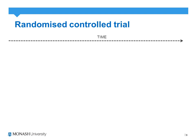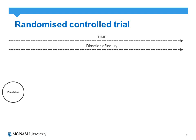This slide demonstrates the randomized controlled trial design. It is a prospective study — the direction of inquiry is forward in time. We have a population from which we recruit a specific sample using our inclusion and exclusion criteria.